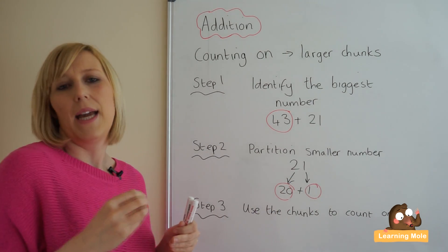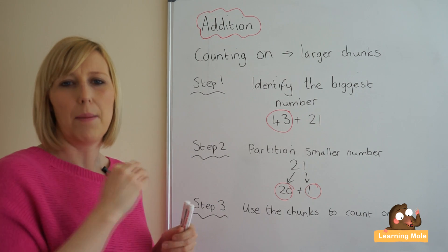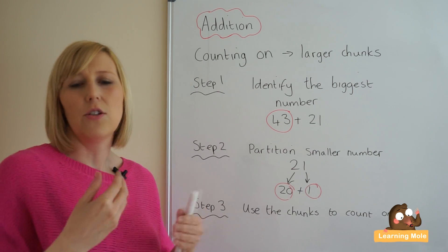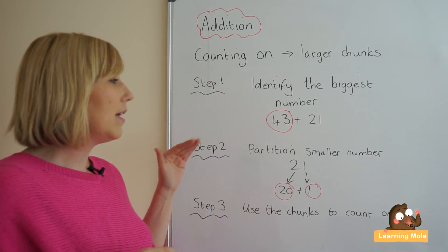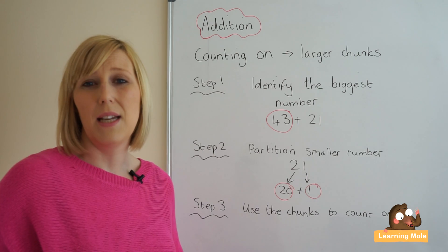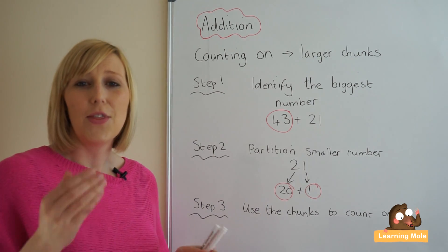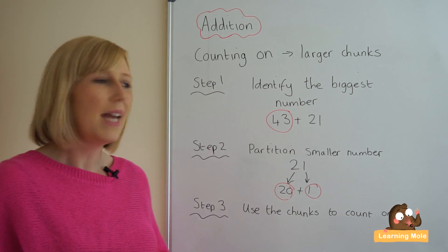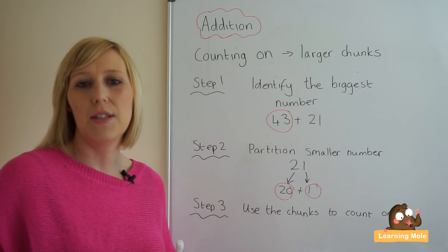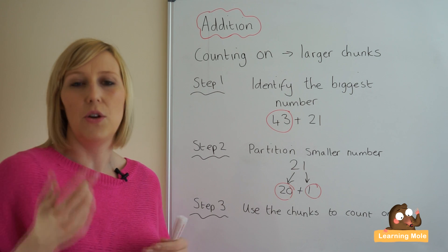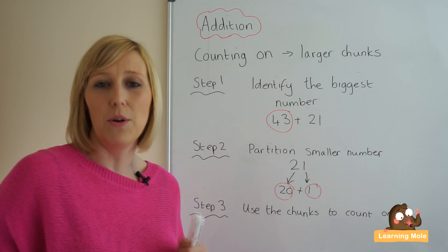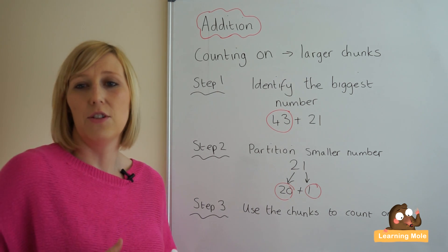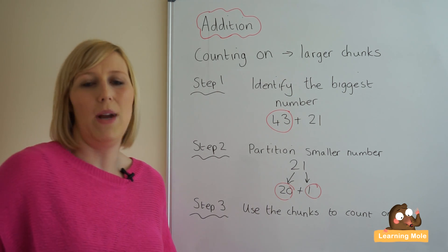So moving from the idea of using that written method, that blank number line to actually putting those steps into practice in a mental capacity and it is absolutely fine to show your child these steps and it's actually probably essential that you talk through these steps and have your child explain what they are doing. Give them a calculation and get them to talk through the steps of what they're actually doing in their heads and you can even record it for them so you can see that they have a really good, firm, clear understanding of the strategy and where and when they might use it.